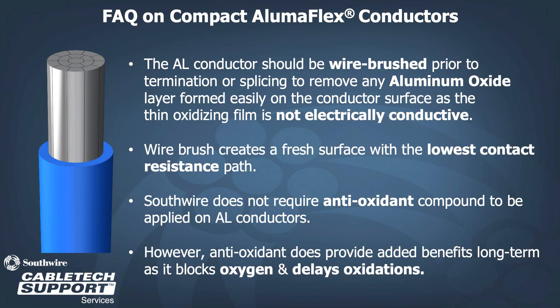The aluminum conductor should be wire brushed prior to terminations or splicing to remove any aluminum oxide layer formed on the conductor surface. This layer is not electrically conductive and should be removed to create a fresh surface with the lowest contact resistance path. It is not our recommendation to require an antioxidant compound to be applied on aluminum conductors; however, it does provide added long-term benefits as it blocks oxygen and delays oxidation.